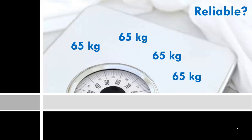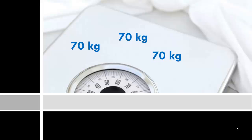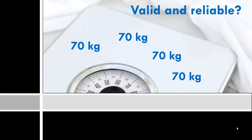But in the example in the last video, the scale was not accurate or valid because the person being weighed really weighed 70 kilograms and not 65. So the scale was reliable because it was consistent in providing the same measurement each and every day, but it was not accurate or valid because the person actually weighed 70 kilograms. For the scale to be valid and reliable, not only does it need to tell you the same weight every time — demonstrating consistency or reliability — but it also has to measure accurately, measuring your actual weight, in order for it to be valid.